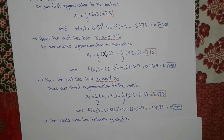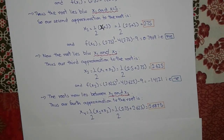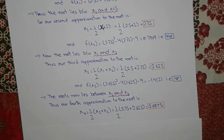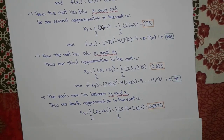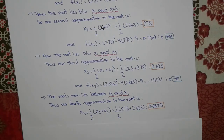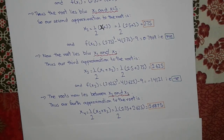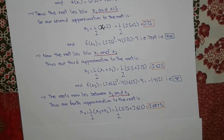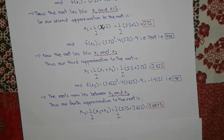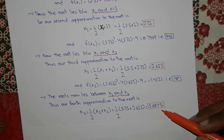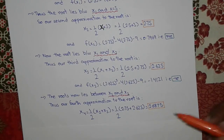The root must lie between x₂ and x₃. Our fourth approximation is x₄ = ½(x₂ + x₃) = ½(2.75 + 2.625) = 2.6875.